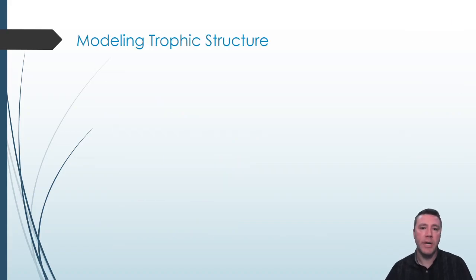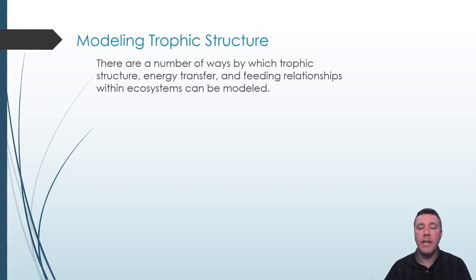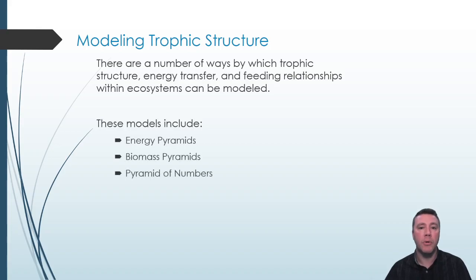We can illustrate the energy transfer, feeding relationships, and trophic structure within an ecosystem in a variety of ways. The most commonly used models are energy pyramids, biomass pyramids, pyramids of numbers, food chains and food webs, and food pyramids.